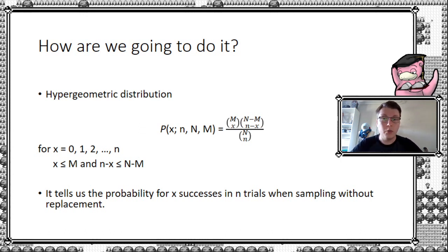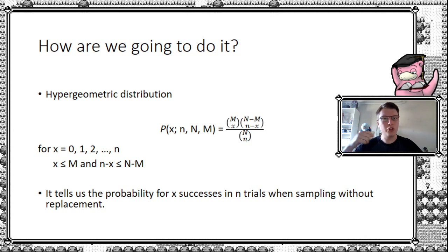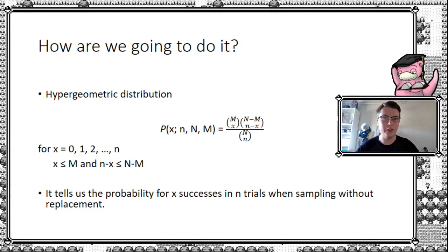What you need to know is what does it tell us? It tells us the probability of X number of successes in N trials when you sample without replacement. The most important part here is the without replacement part, because when you're drawing from a deck of Pokémon cards, every time you draw a card that population changes — you're not putting the card back. So drawing your opening hand means the first card comes from a 60-card deck, the second from a 59-card deck, and so forth. That is why this hypergeometric distribution, rather than the binomial, is applicable here.